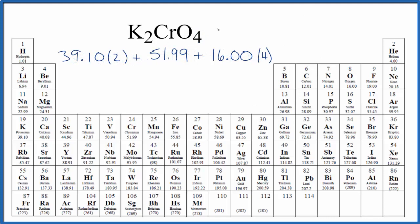When we multiply and then add all of these numbers up, we'll multiply 39.10 times 2, we'll add that to 51.99, and then we'll add that to 16.00 times 4. We get 194.19, and the units are grams per mole.